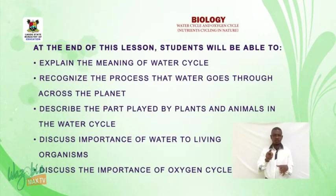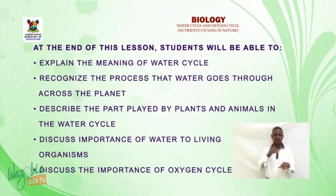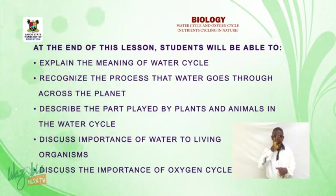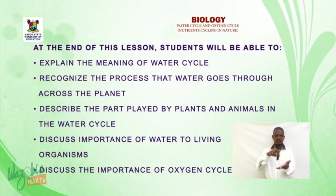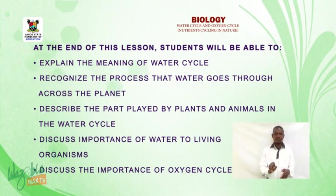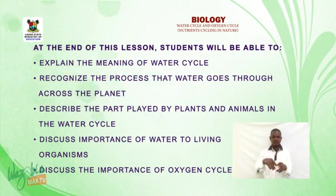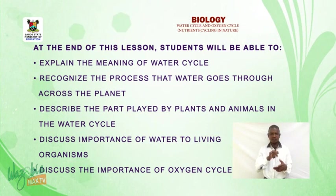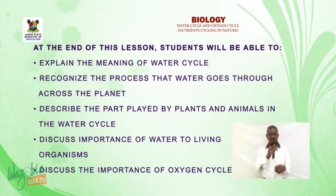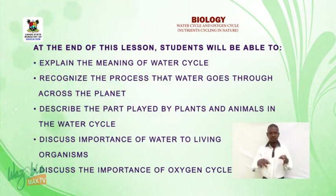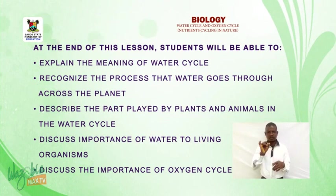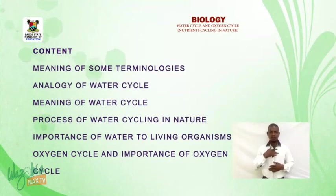Under nutrient cycling in nature. At the end of this lesson, students will be able to: explain the meaning of water cycle; recognize the processes that water goes through across the planet; describe the parts played by plants and animals in the water cycle; discuss the importance of water to living organisms; and discuss the importance of oxygen cycle. Now let us enjoy the lesson together.